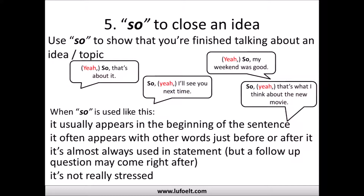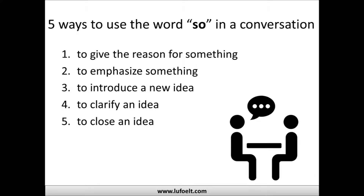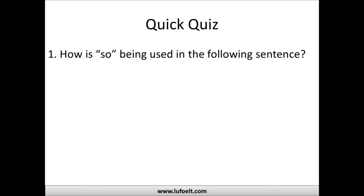When closing an idea, 'so' is not really stressed — we say it quickly as part of the sentence. It's an indicator, very similar to the third way, except here it signals we're closing rather than opening a topic. So to recap: the five ways to use 'so' are — first, to give the reason for something; second, to emphasize something; third, to introduce a new idea; fourth, to clarify an idea; fifth, to close an idea.